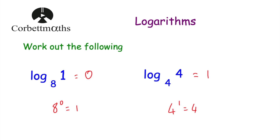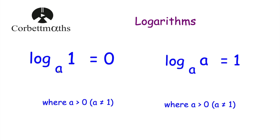Let's look at it generally. Log to base a of 1 is equal to 0 — because what power would you raise a by to get to 1? That'd be 0. And log to base a of a is equal to 1 — because what power would you raise a by to get to a? The answer would be 1. These two are quite important, so if you've got a notebook, I'd recommend you jot those down and learn them.